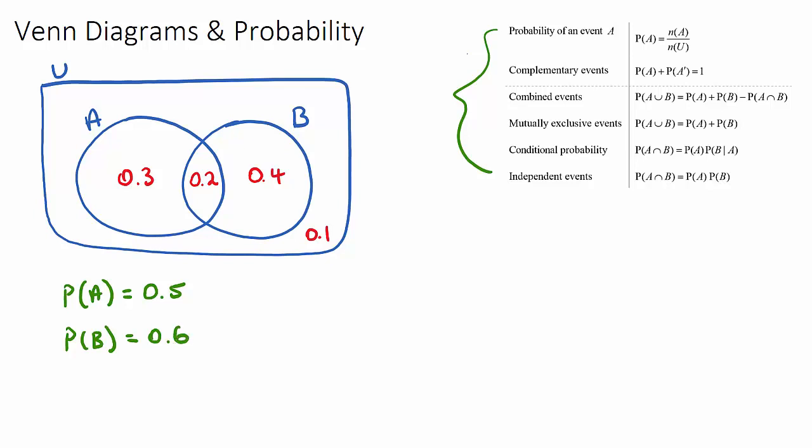Now if we want to know the probability of not A, it's this A with a little dash at the top, this is going to be 1 minus the probability of A. So it's going to be 1 minus 0.5, therefore 0.5. And the probability of not B would be 1 minus the probability of B, which is pretty much everything not in B, so it'd be the 0.1 and the 0.3, which is 0.4.